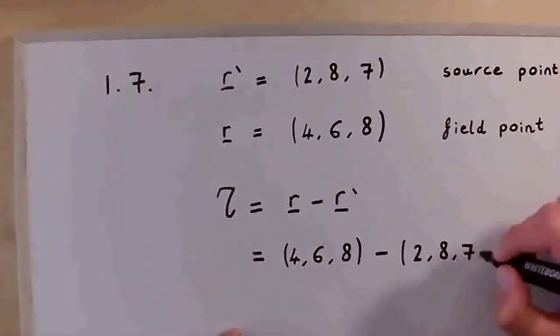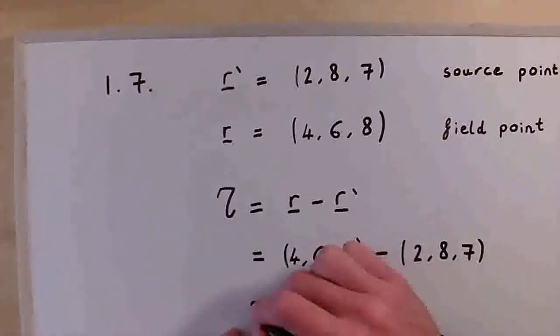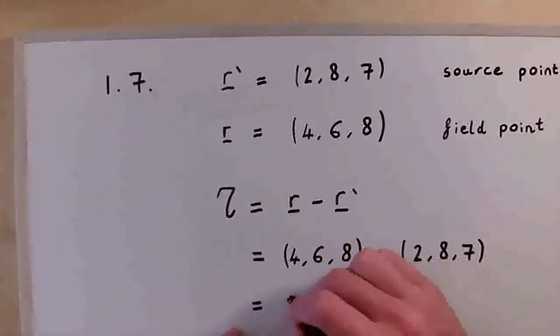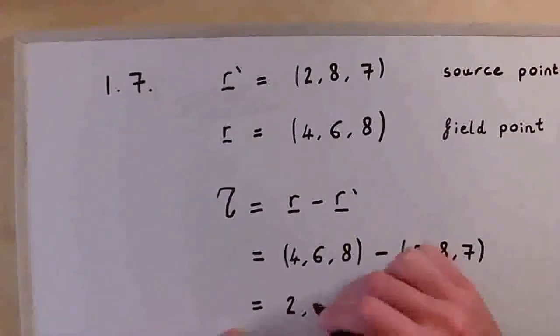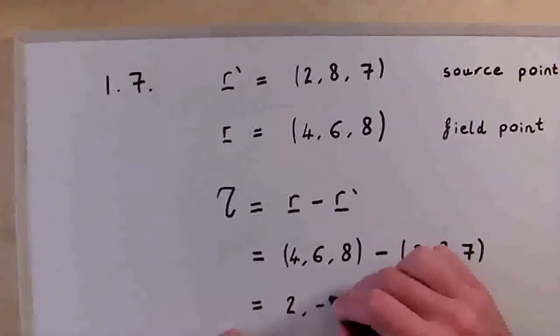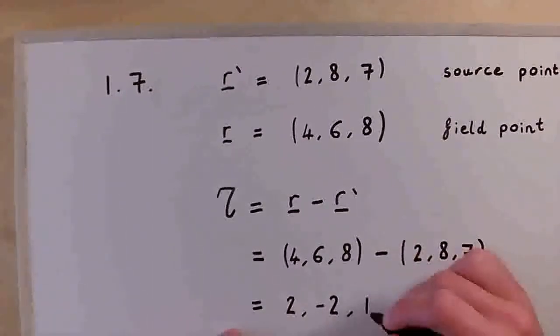And then calculate the resulting vector component-wise, so 4 minus 2 is 2, 6 minus 8 is minus 2, and 8 minus 7 is 1.